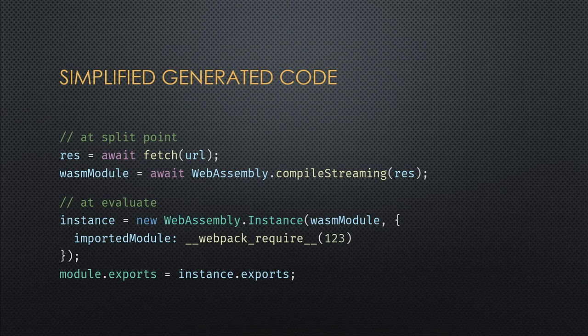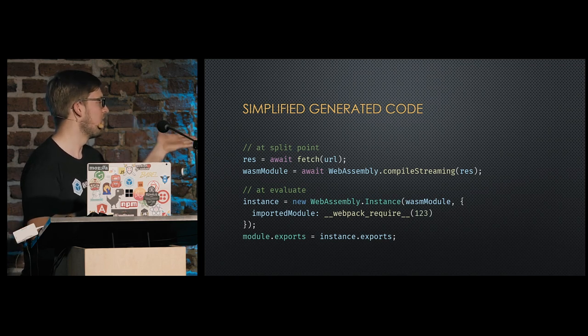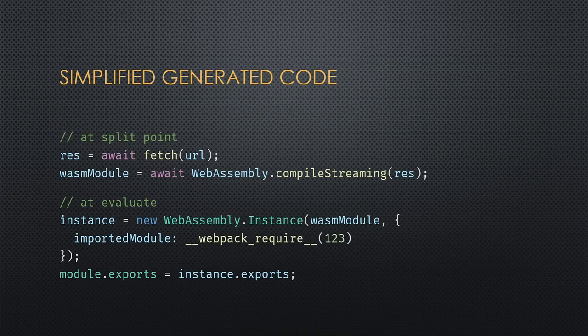In code at the split point, we fetch the WebAssembly module from the URL, then compile it with compile-streaming, which returns a promise and gives us the compiled WebAssembly module. In the evaluation phase, we instantiate the module passing the imports object with all dependencies — using Webpack's internal require to load dependencies — then export all the exports from the WebAssembly module.